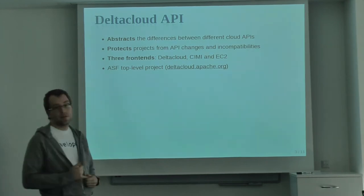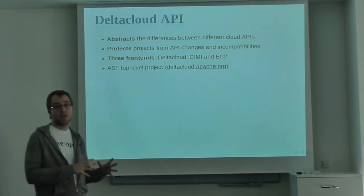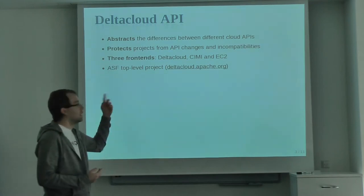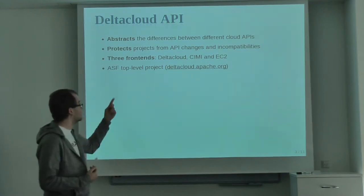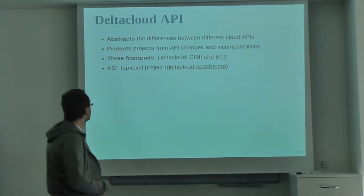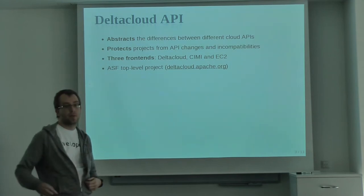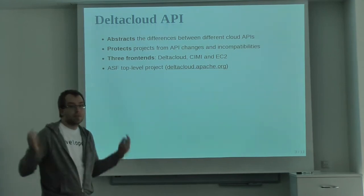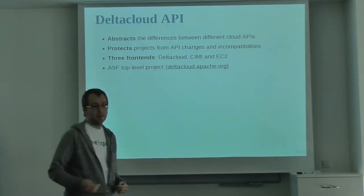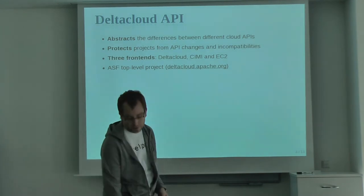Currently we have three components — there is not just Delta Cloud, we also have the CIMI API component and an EC2 API component. We became an Apache Software Foundation top-level project, so we graduated from the Incubator. We are now a top-level project, which basically means we can do releases as we want without waiting for a committee.